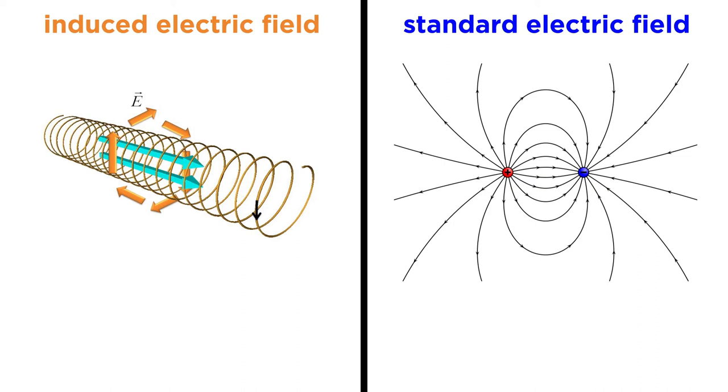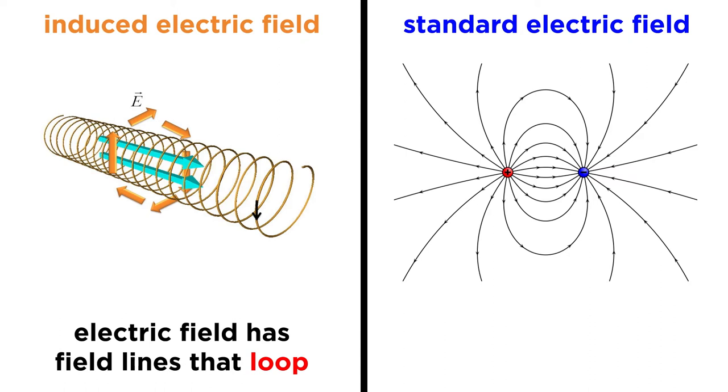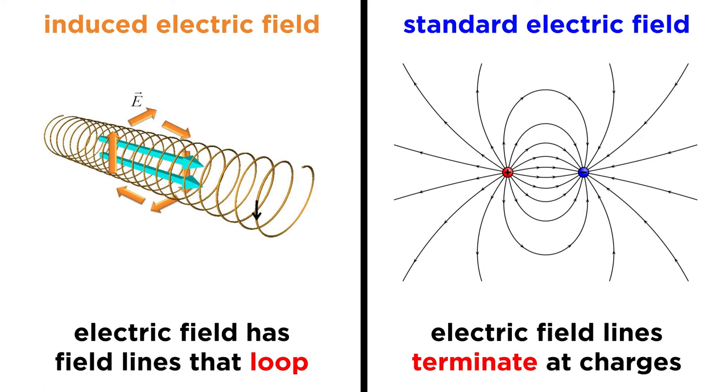However, this distinction is important in an interesting way. The induced electric field differs from that produced by a charge or set of charges. The induced electric field has field lines that loop, like the static magnetic field, while the standard electric field has field lines that terminate at charges.